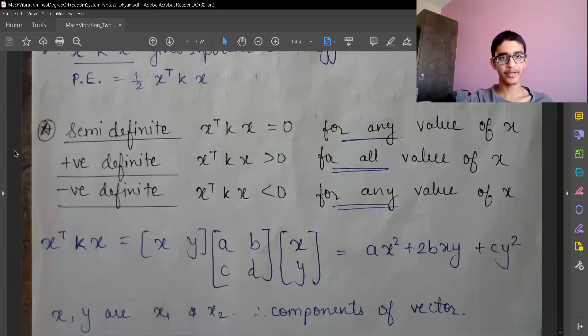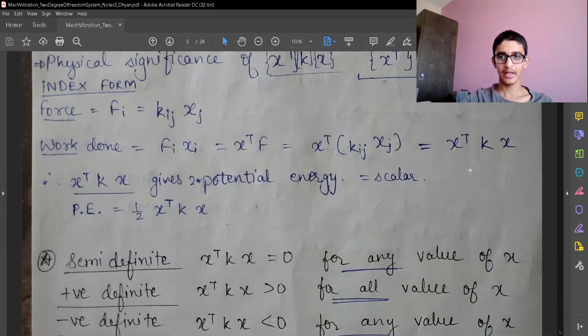Let's come to the three different kinds of matrices: semi-definite, positive definite, and negative definite. We know that the stiffness matrix is a positive definite matrix and we were getting the result of stiffness matrix multiplied by X in this form equal to the work done or some kind of energy.